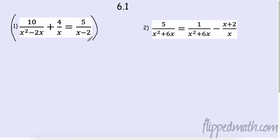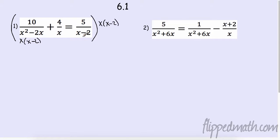The first thing you have to do is find out all the factors. In this case I have an x and an x minus 2, so I'm going to multiply everything by the least common multiple, which is x times (x minus 2). I have an x minus 2 here, an x here, and both here.